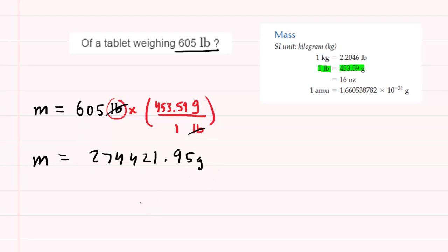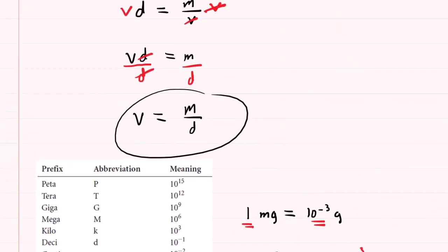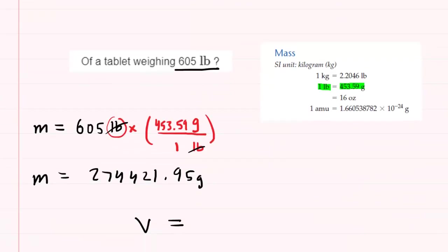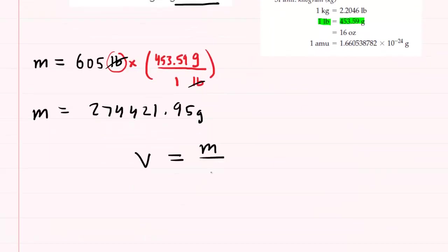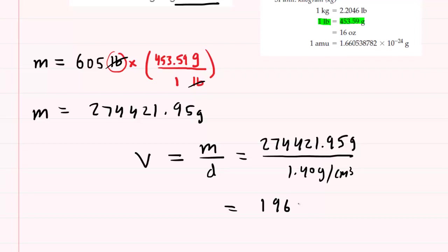So now that we have the mass in grams, we can again calculate the volume. We know that volume was mass over density. So mass divided by density. We'll take the mass that we just determined and then divide it by the density, which was 1.40 grams per centimeter cubed. Let's do this division. We end up with a volume of 196016 approximately. And this will be in centimeters cubed. So this would be the correct answer to part B.